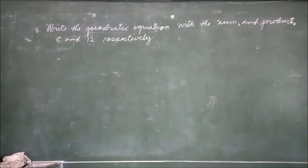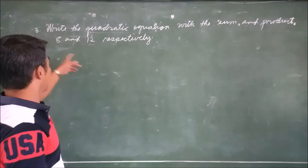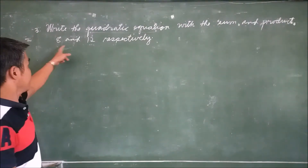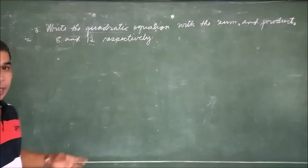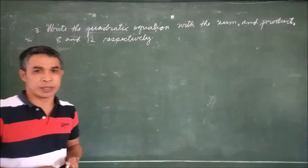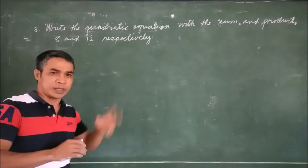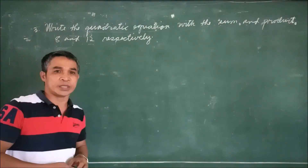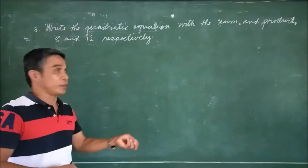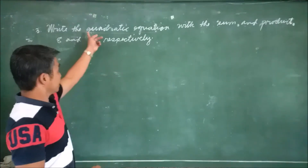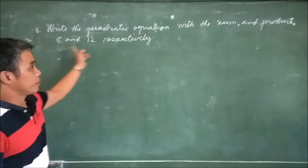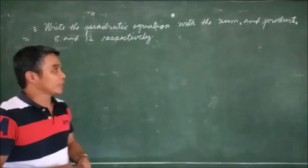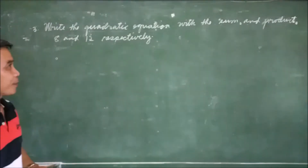Number 3 example: write the quadratic equation with sum and product 8 and 12 respectively. In example 2, the given were the roots and we just worked backwards to the quadratic equation. But this is even easier — when the sum and product are given.